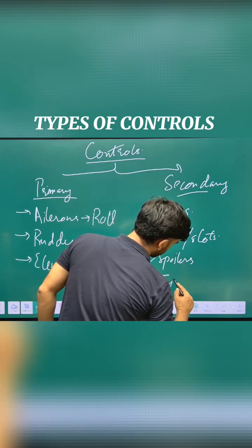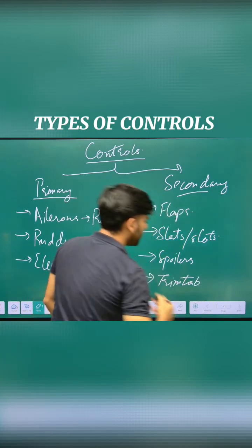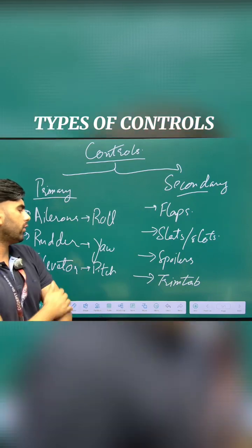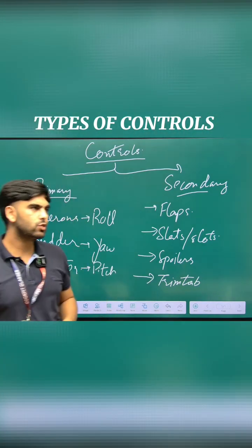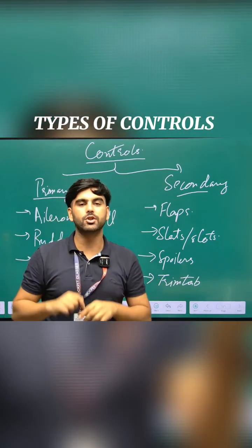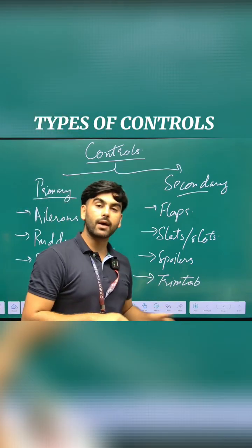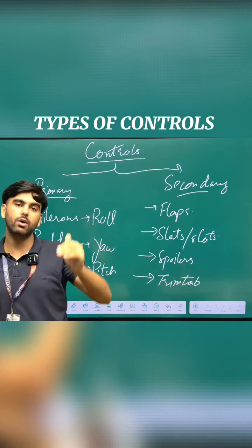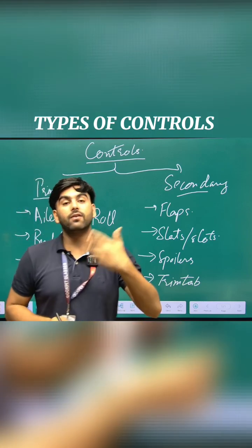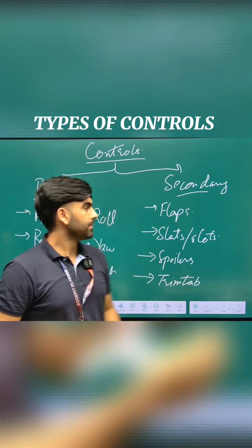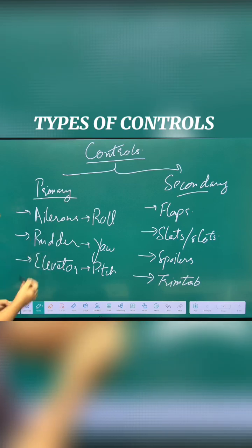Another secondary control is the trim tab. When you go for training on a single-engine or multi-engine aircraft, you will usually see a small tab situated on the elevator — that is known as the trim tab. It basically reduces the stick force on the pilot. So those are four secondary controls, and there are three primary controls that you will come across on most aircraft.